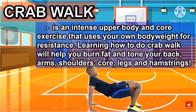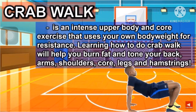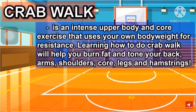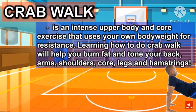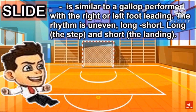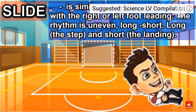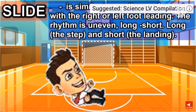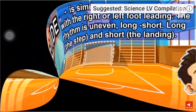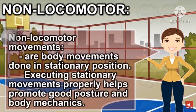Crab Walk — an intense upper body and core exercise that uses your own body weight for resistance. Slide — similar to a gallop, performed with the right or left foot leading; the rhythm is an even long-short, long-short — the long is the step and the short is the landing.